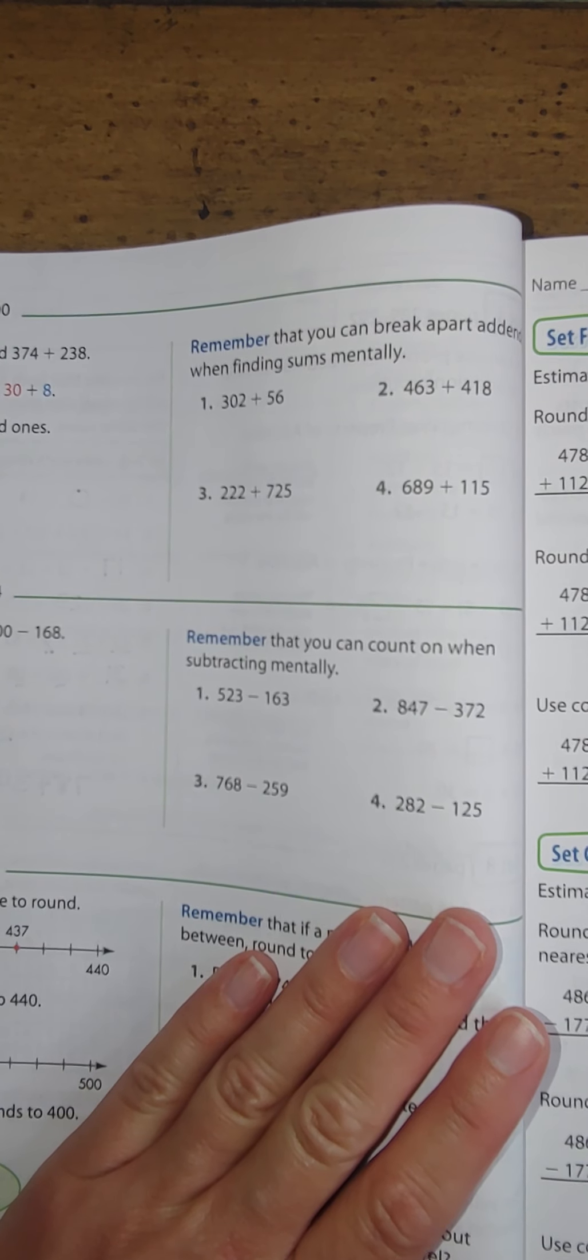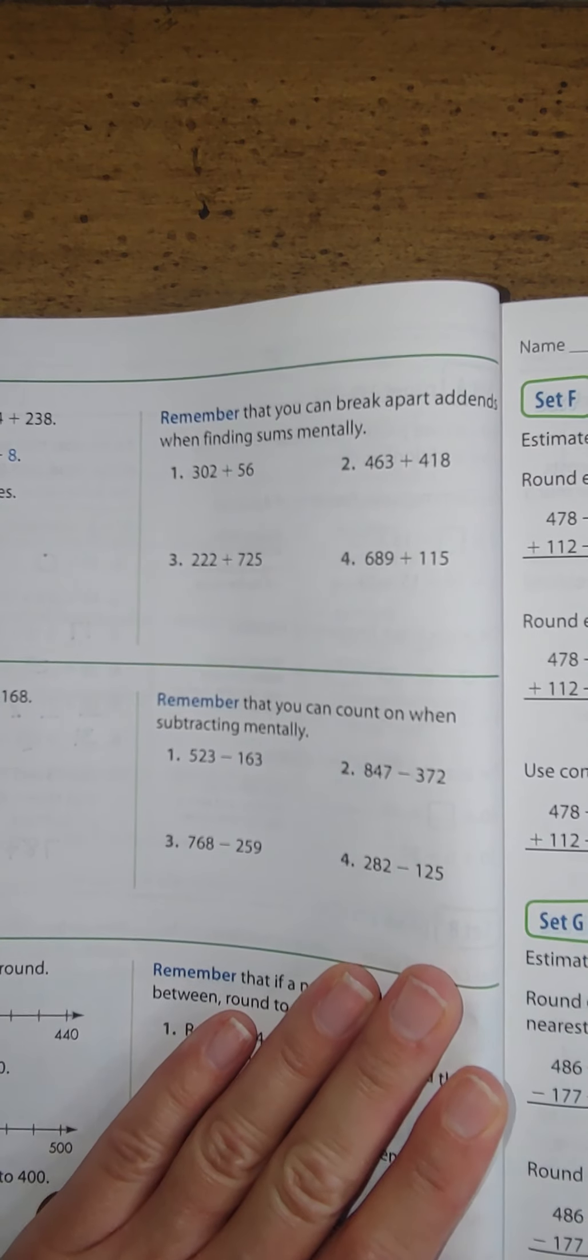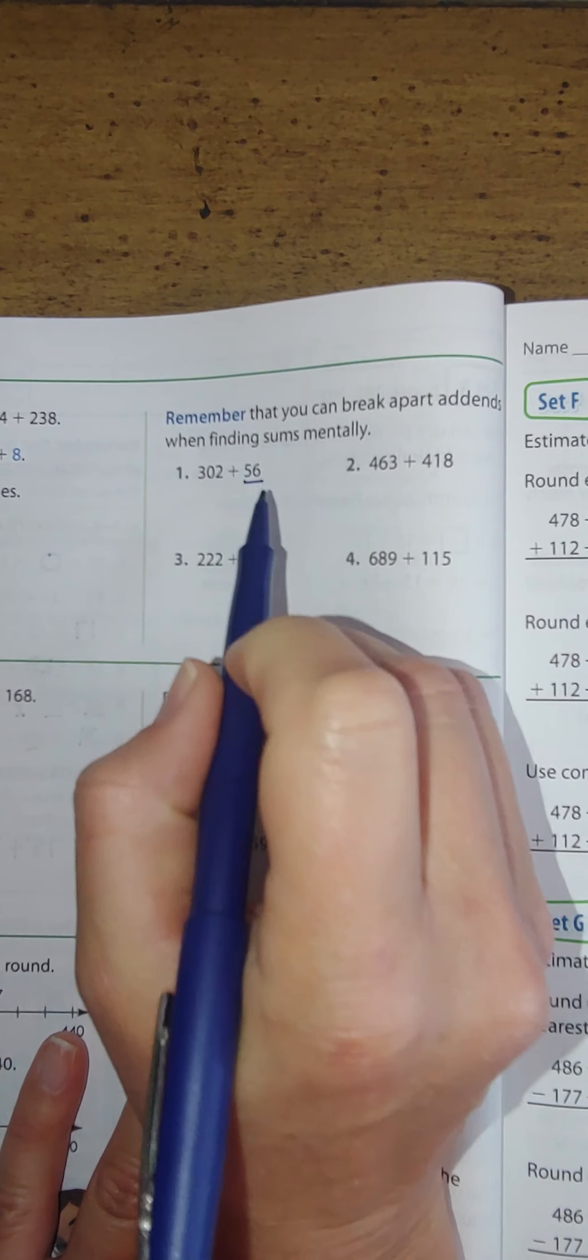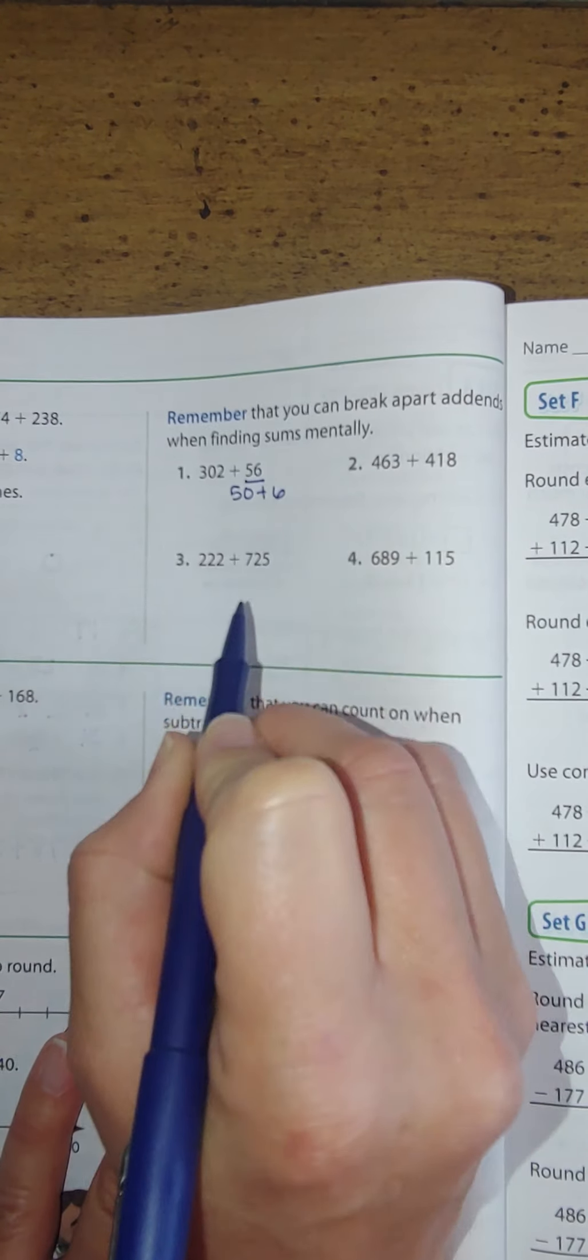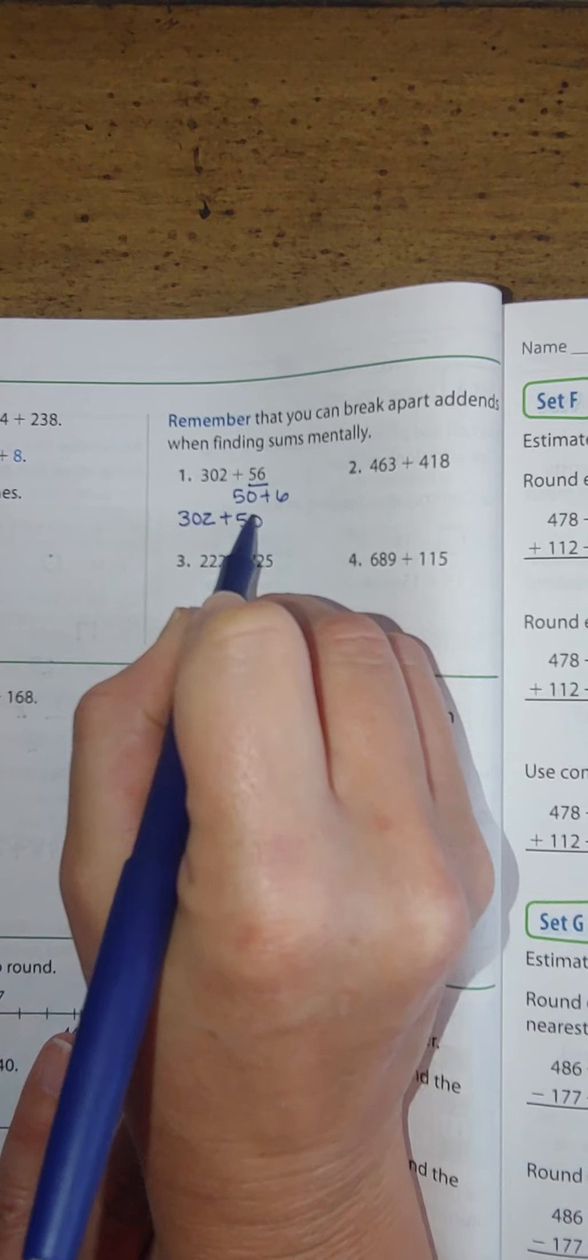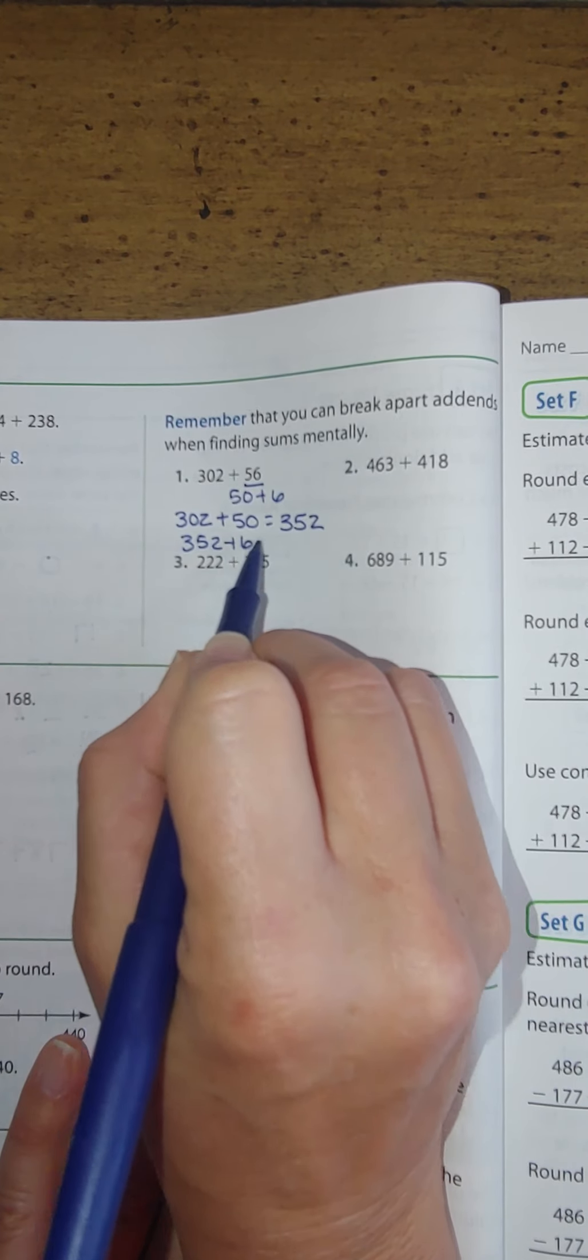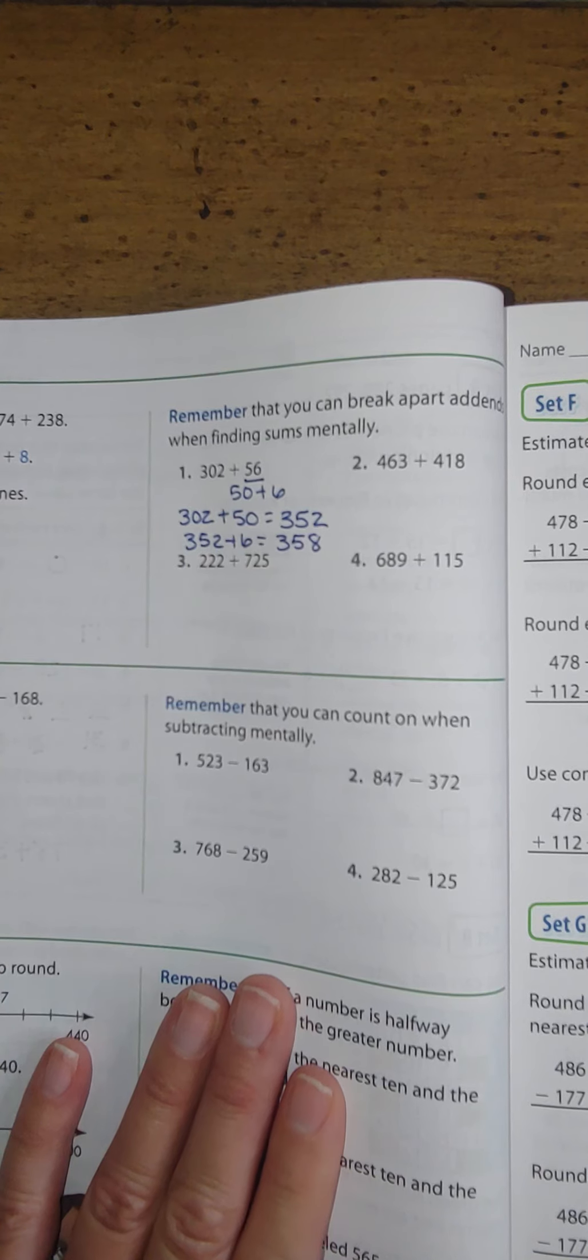At the top here, you're going to see that we're going to be breaking apart our addends to add them up mentally. So let's go ahead and break apart our 56 into 50 plus 6. So let's say 302 plus 50, which would be 352. And then 352 plus 6, which would give me a sum of 358.